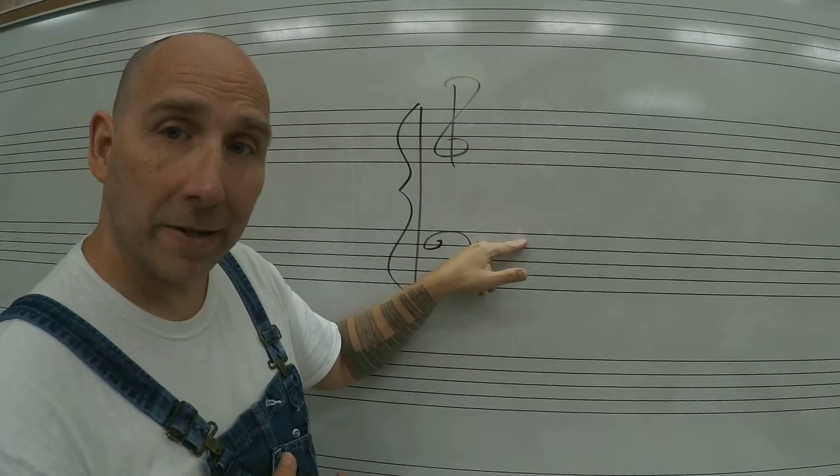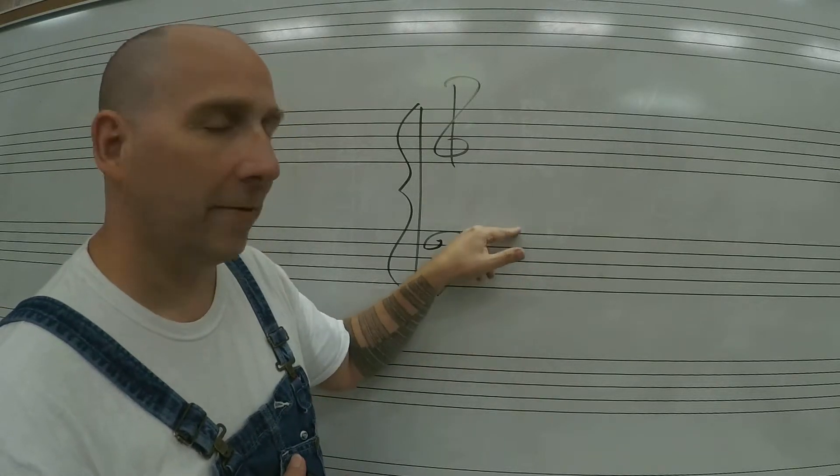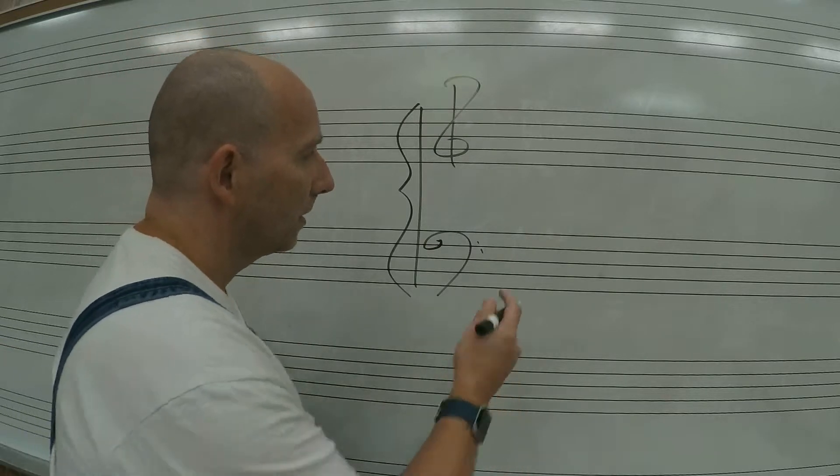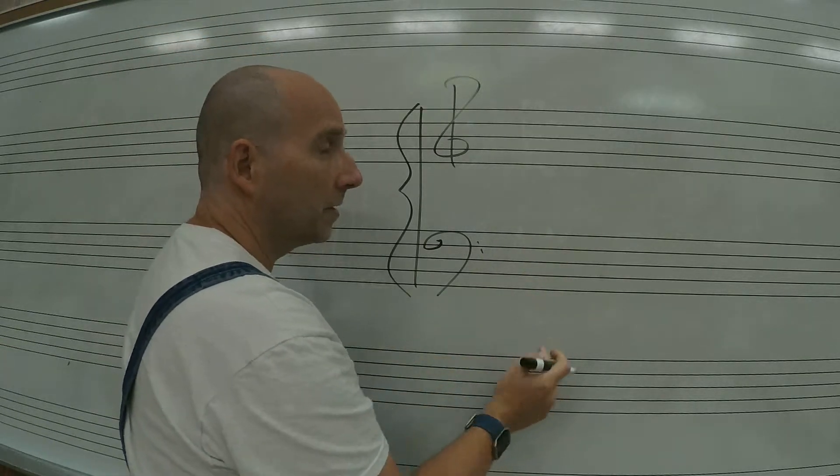Bass clef - All Cows Eat Grass are the spaces. Green Buses Drive Fast Always are the lines. And again, ledger lines going up, ledger lines going down.